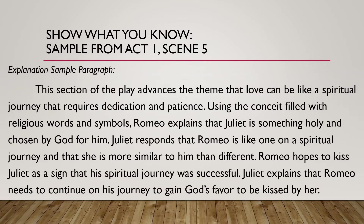Your final task is to write a brief paragraph explaining the choices you made as you created your oral interpretation. Here is my sample paragraph: This section of the play advances the theme that love can be like a spiritual journey that requires dedication and patience. Using a conceit filled with religious words and symbols, Romeo explains that Juliet is something holy and chosen by God for him. Juliet responds that Romeo is like one on a spiritual journey and that she is more similar to him than different. Romeo hopes to kiss Juliet as a sign that his spiritual journey was successful. Juliet explains that Romeo needs to continue on his journey to gain God's favor to be kissed by her. We hope this sample and paragraph will help you with your oral interpretation.